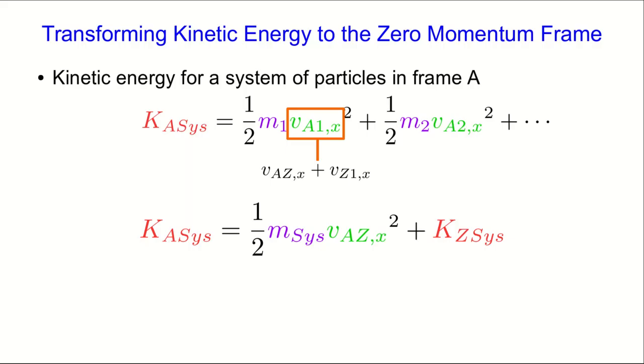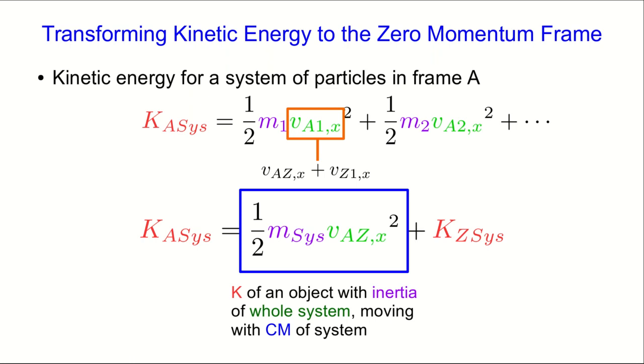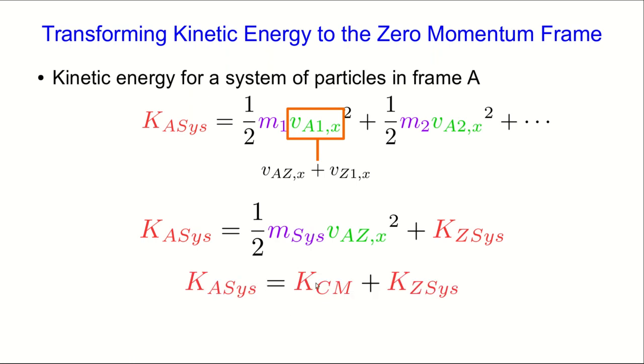Let's just spend a little bit of time looking at this relationship and thinking about the meaning of the quantities in it. If you look at this first term, you see that it's a half mv squared. It's of that form. And so it's a kinetic energy. And specifically, it's the kinetic energy of some imaginary object which has an inertia equal to the inertia of the whole system. And it's moving at the center of mass velocity of the system. And so this often gets called the kinetic energy of the center of mass.